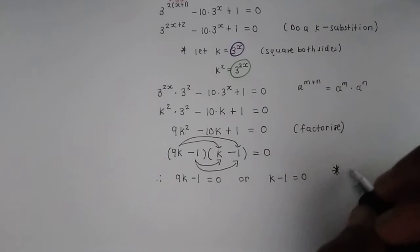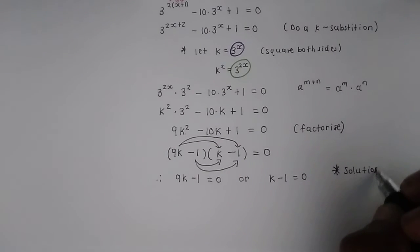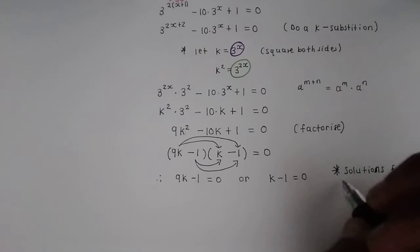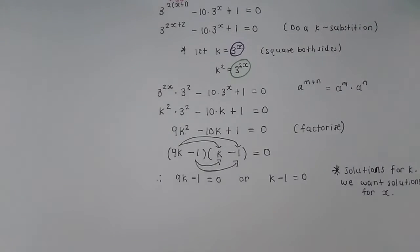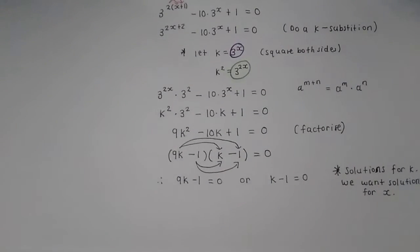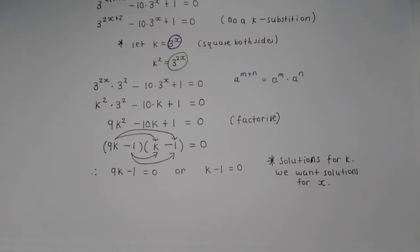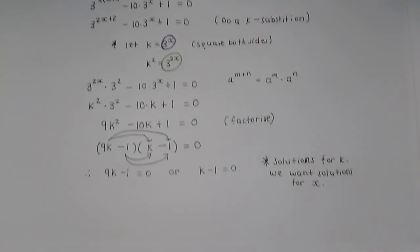So now we have that therefore the brackets 9k minus 1 must equal 0 or the brackets k minus 1 must equal 0. Now notice this. These are solutions for k. We want solutions for x. I did not write the instruction over here, but the original instruction was to solve for x, not to solve for k.